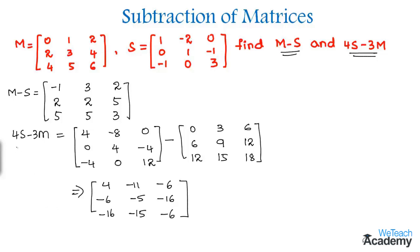So this is the matrix for the subtraction 4S minus 3M. So in this way we need to multiply the scalar with the matrix.